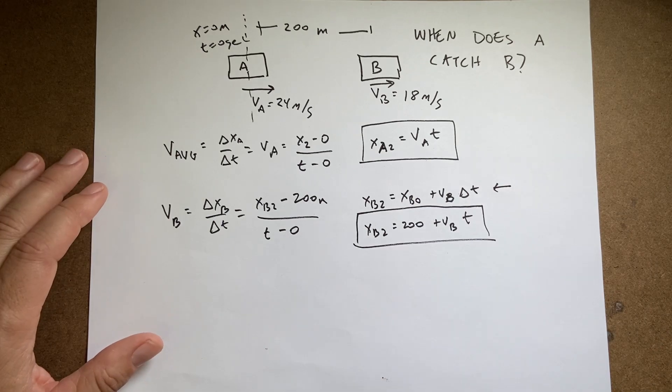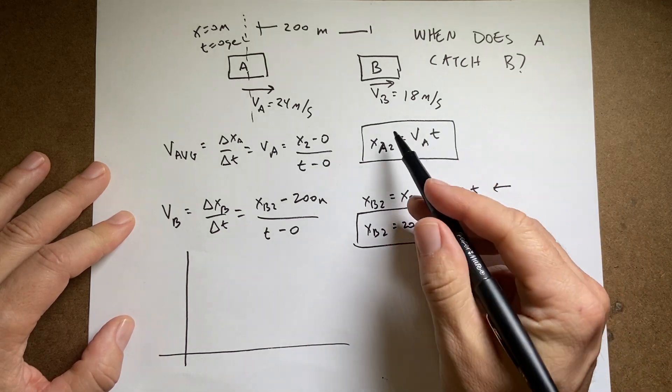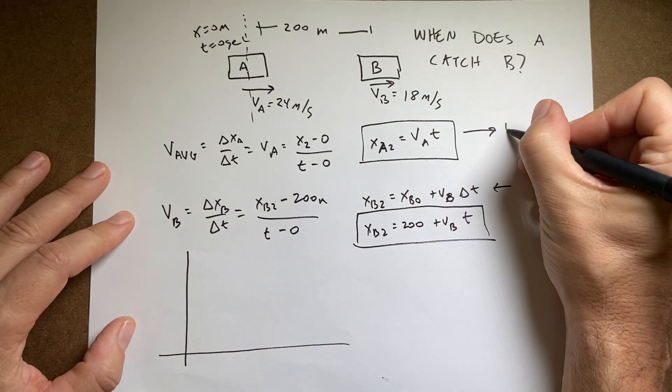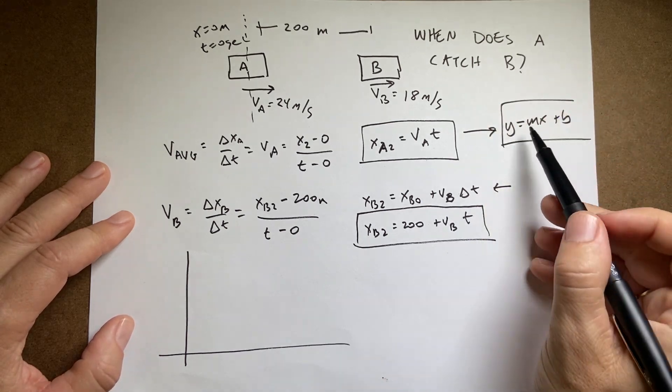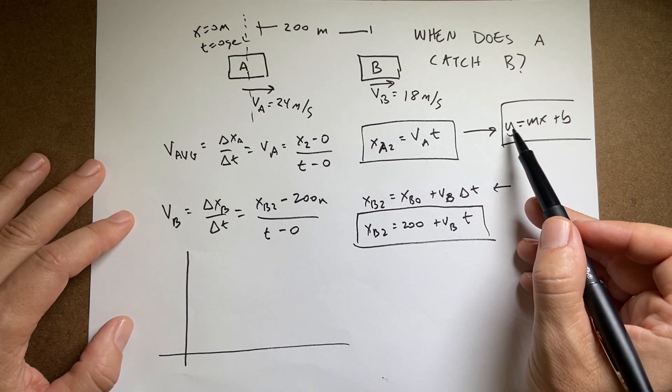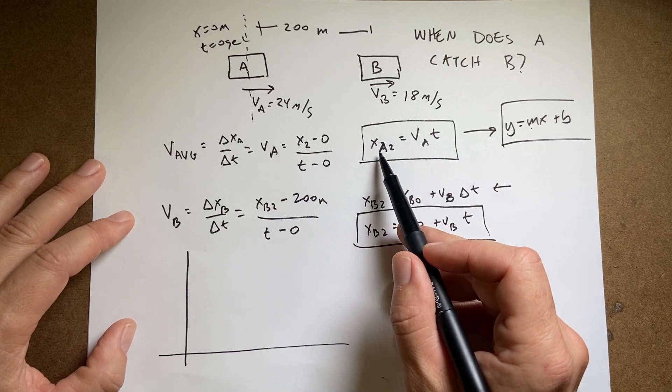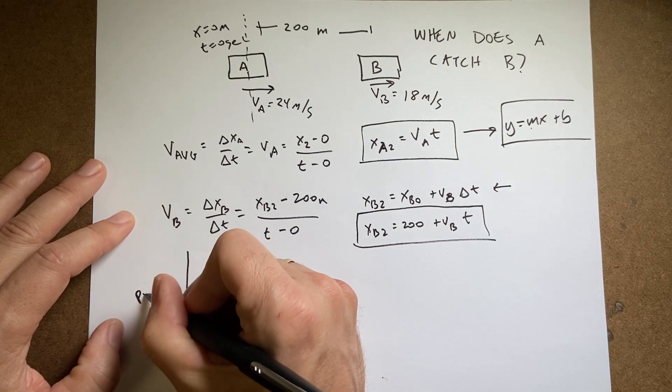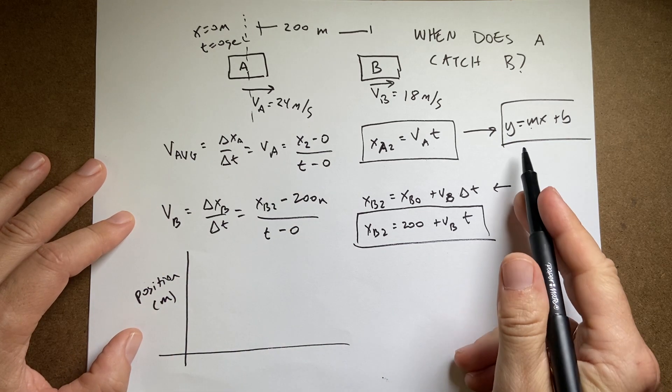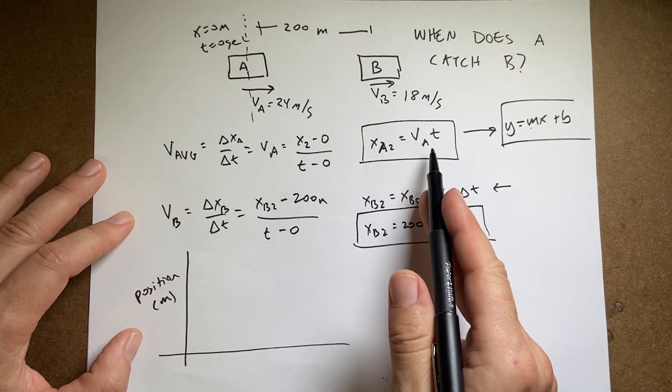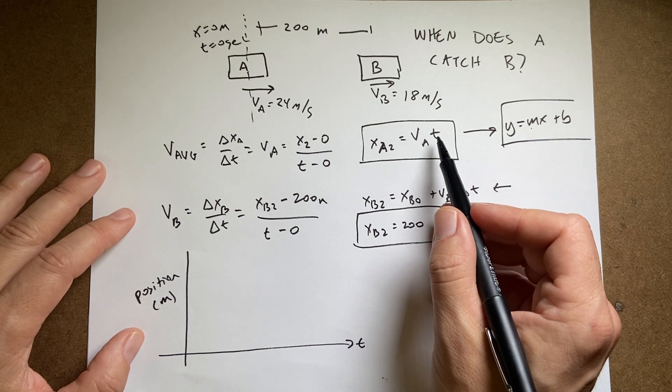So I can plot these two functions and at least make a sketch. This is like, just as a reminder, y equals mx plus B. That's your equation of a line. So this is the vertical variable, the horizontal variable, the slope, and the y-intercept. So this says the vertical variable should be the position. So I'll call this position in meters. And then the horizontal variable, x, is going to be t, time.